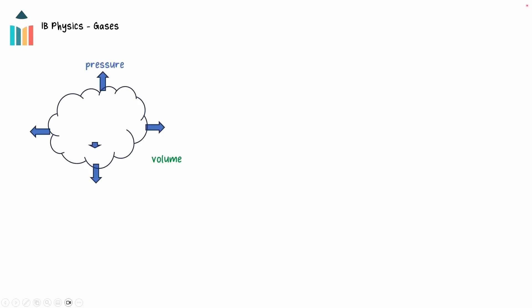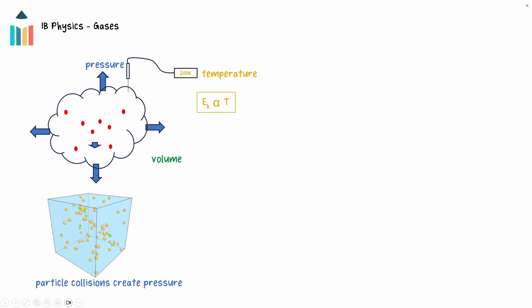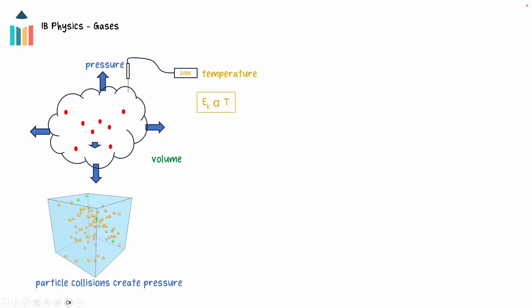The volume, pressure, and temperature of a gas are bulk properties of a gas at a macroscopic scale. At a microscopic scale, a gas is made up of a collection of particles, each one in random motion. This motion is related to the temperature of the gas. Temperature is directly proportional to the average kinetic energy of the particles. The gas particles collide with each other and with the walls of the container, and this free motion causes a gas to expand to fill the volume of the container it is in.